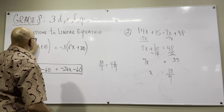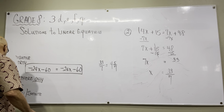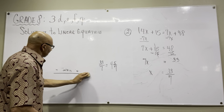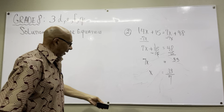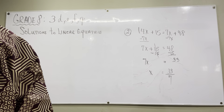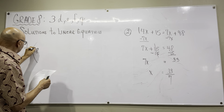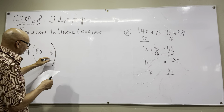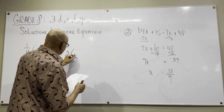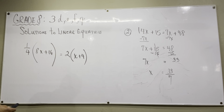Let's erase this and work through another practice problem. Today is just our introduction, so you'll have a chance to practice and we'll identify what may be giving anyone trouble. The new problem is: one-fourth times the quantity 8x plus 16 equals 2 times the quantity x plus 4. I have two quantities and I'm trying to solve for x. To remove the parentheses I use the distributive property, multiplying one-fourth by 8x and one-fourth by 16.